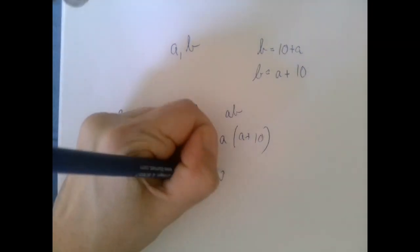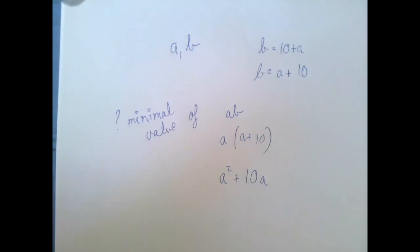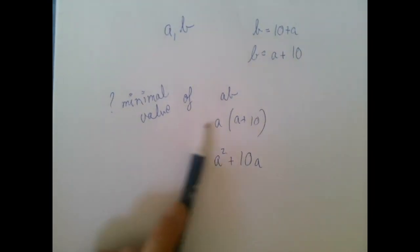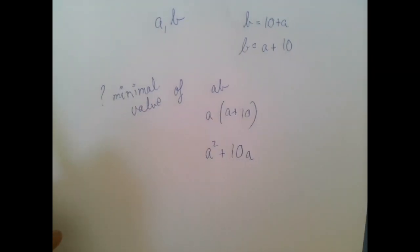So we have a squared plus 10a, and we're going to complete the square not to find a zeroes, not to factor, that was already done, but to find the lowest value for that.